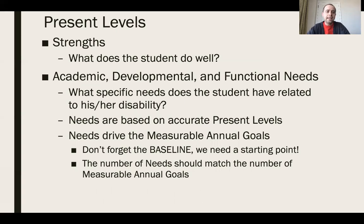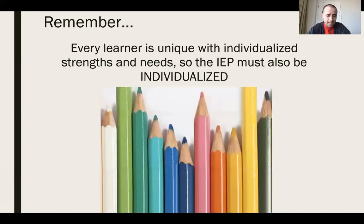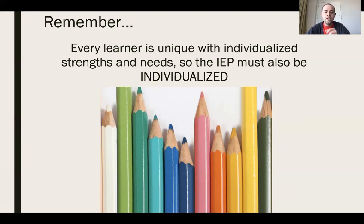The strengths tell us what the student does well, and those needs are based on accurate present levels. The needs drive the measurable annual goals — we have to start from a baseline, a starting point, and then forecast where we want that individual to be in one year's time. Every single IEP, as the title says, is an Individualized Education Program, so it needs to be individualized. Just like these colored pencils are all different shapes, sizes, and shades, so should our IEPs be.